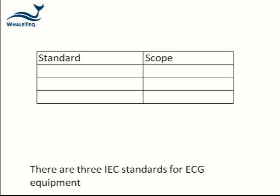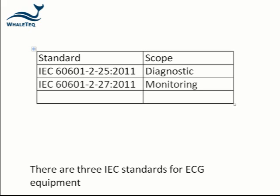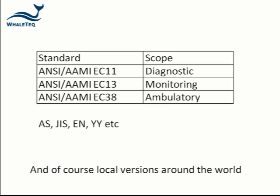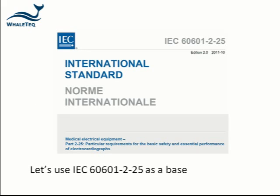There are three IEC standards for ECG equipment: IEC 60601-2-25 for diagnostic, 2-27 for monitoring, and 2-47 for ambulatory or Holter ECGs. In the US there are similar standards, and of course a range of standards around the world for national regulations. For now let's use 2-25 as a base for the tests and discuss the variations later on.